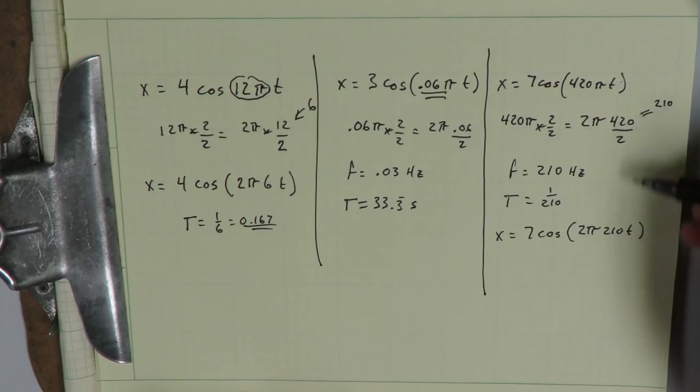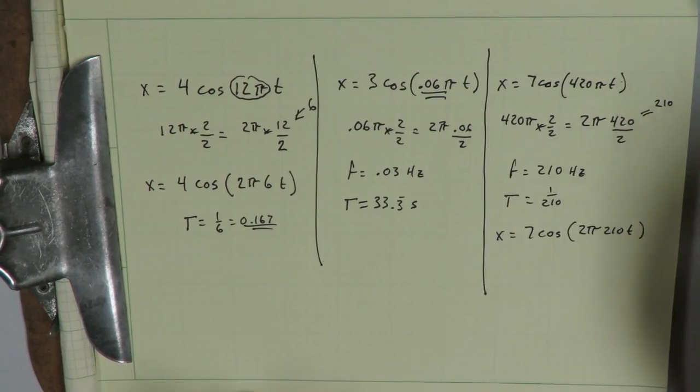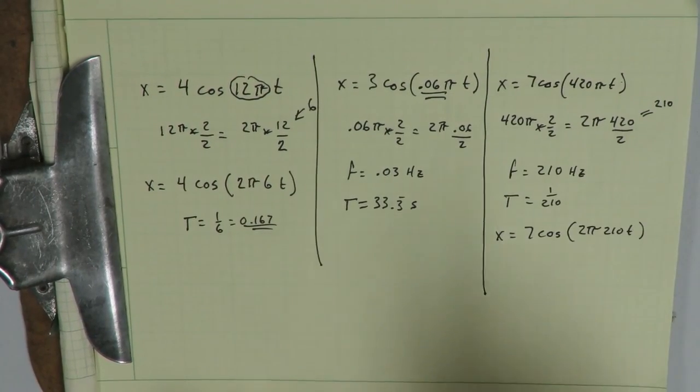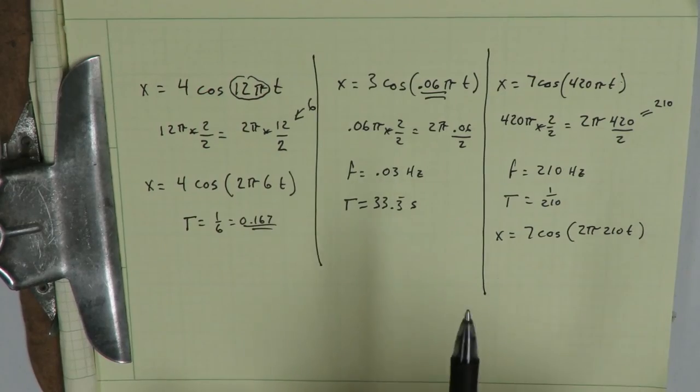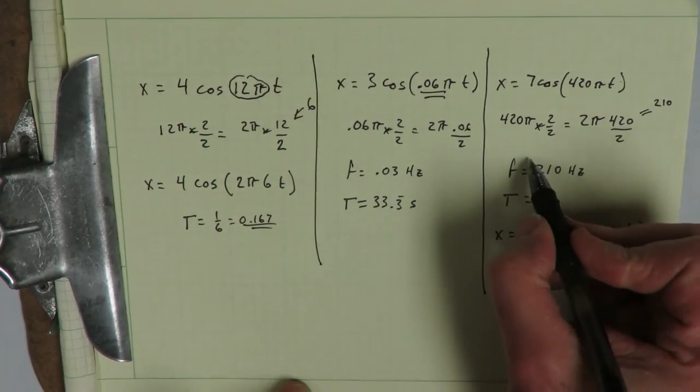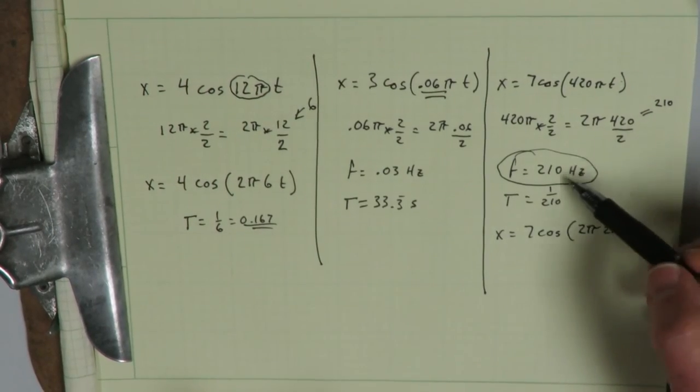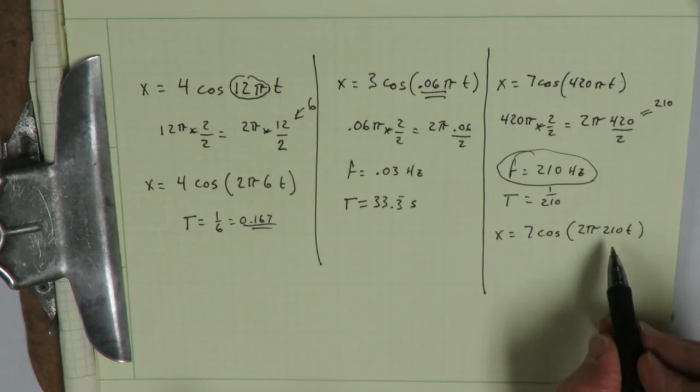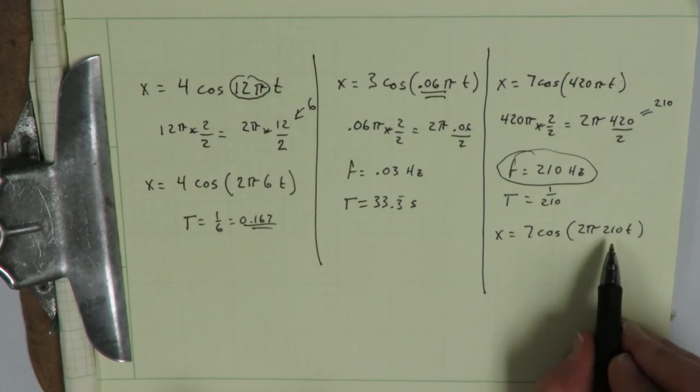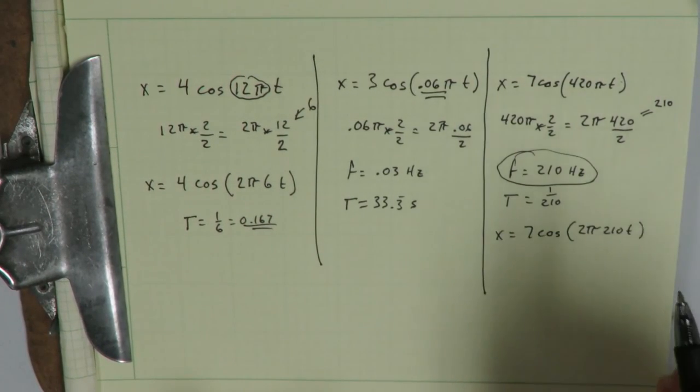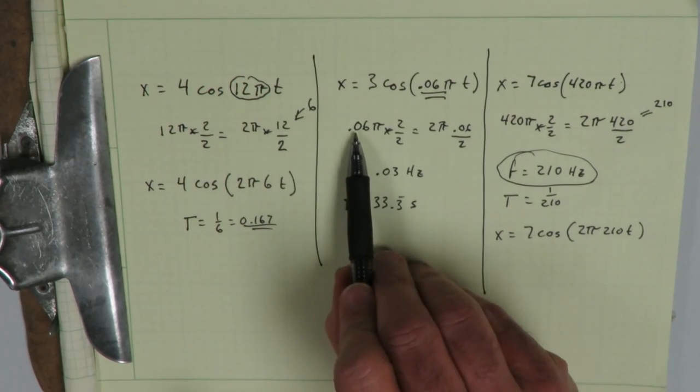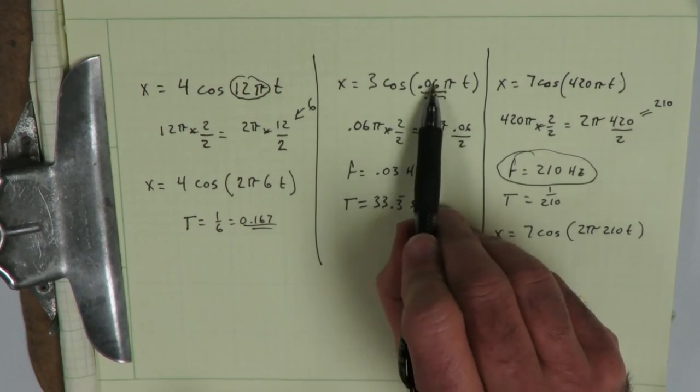Fairly easy to get from this to this when it's a big number. But anyway, now what we see here is that sometimes it is useful to use the frequency. Frequency of 210 hertz, we can get our minds around that. So in that case, we want to use the 2 pi f form of this equation, because 210 hertz is right there and it's easy for us to understand.